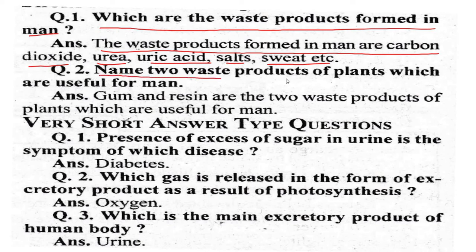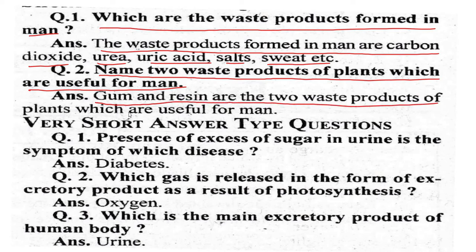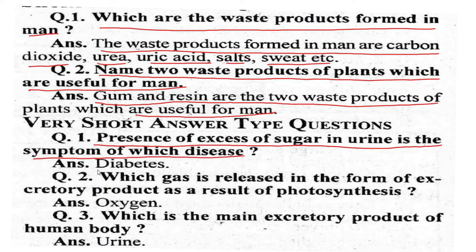Name two waste products of plants which are useful to humans. Gum and resin are the two waste products of plants which are useful for humans. The presence of excess sugar in urine is the symptom of diabetes.